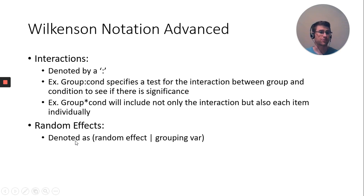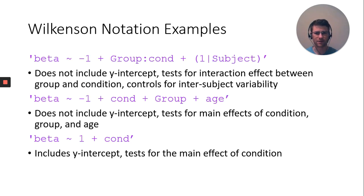You can also look for random effects or control for them, denoted as the random effect with the straight bar and the grouping variable, which was previously a one straight line with subject as the grouping variable. That's controlling for the random effect of individual variability.